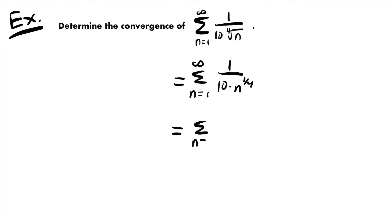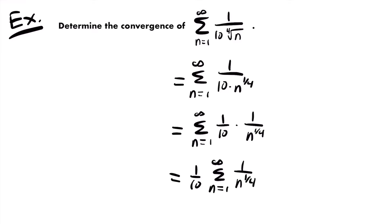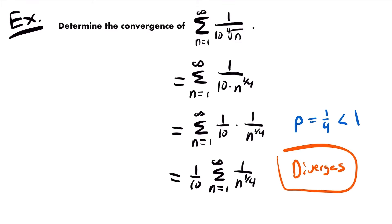Now this more closely resembles a p-series. The 10 in the denominator is just a constant multiple — one-tenth — and it does not affect convergence. We can pull that one-tenth out to the front, giving us one-tenth times the sum from n equals 1 to infinity of 1 divided by n to the one-fourth power. So we have a p-series where p is equal to one-fourth, and that is less than 1. Since p is not greater than 1, this series diverges. For a p-series to converge, p must be greater than 1.